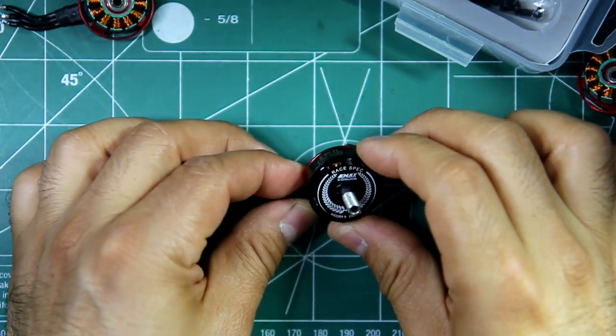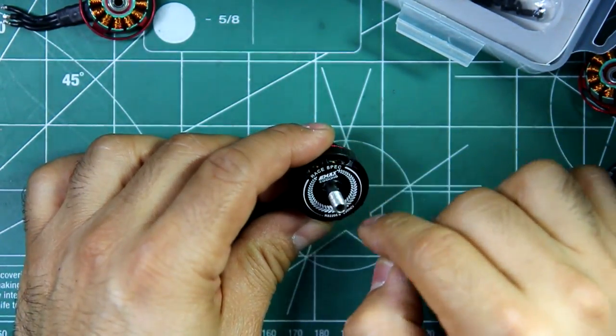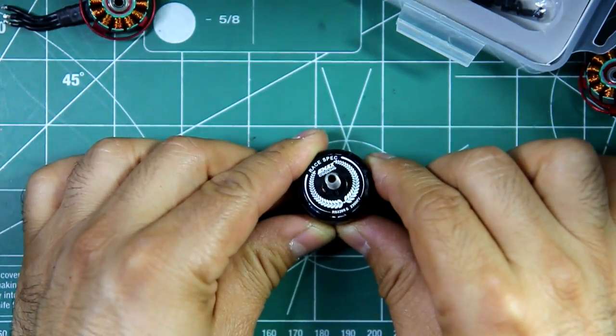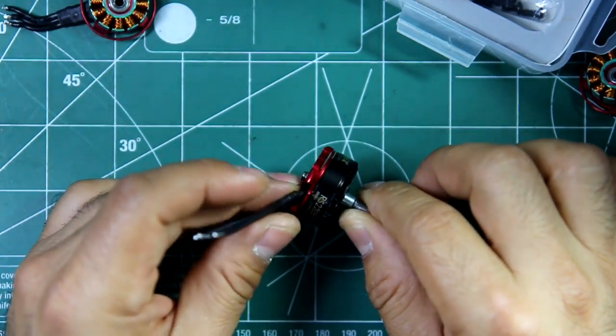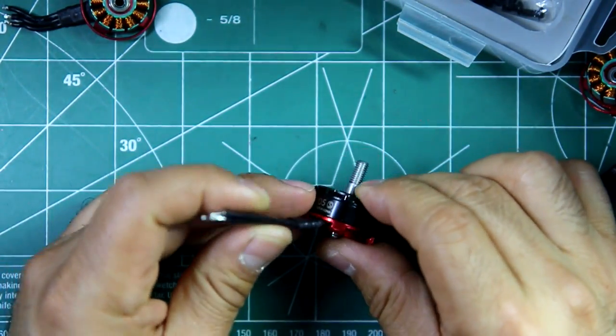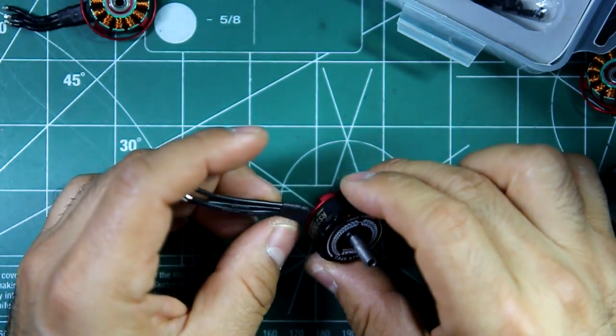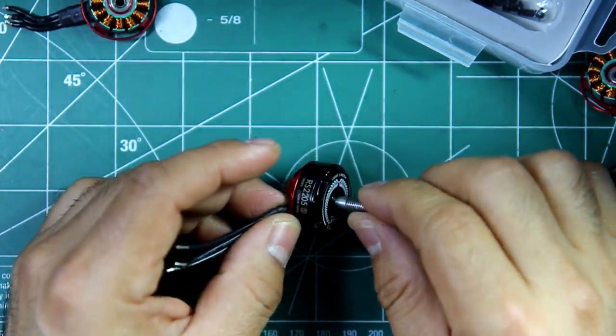So EMAX did away with motor direction, so there's no more CW and CCW. It's going to be standard threads for all the motors, which I think is an excellent idea. All you need is one lock nut for all your motors, you don't have to have different types of lock nuts.